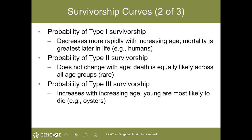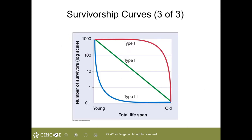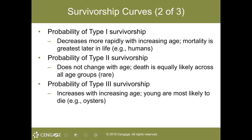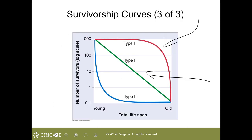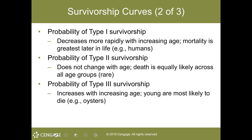The Type 1 survivorship curve: the probability of survivorship decreases more rapidly with increasing age, and mortality is greatest later in life — as in humans. The older we get, the more likely it is for mortality to be experienced. With a Type 2 survivorship curve, survivorship does not change with age — death is as likely in the beginning as it is throughout life. Some birds exhibit such a curve, though it's not too often to see species exhibit a Type 2 survivorship curve.